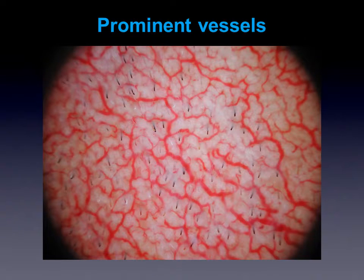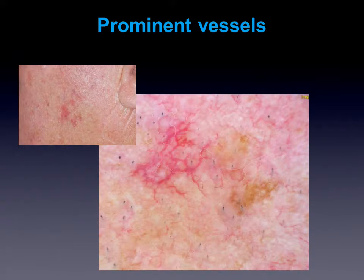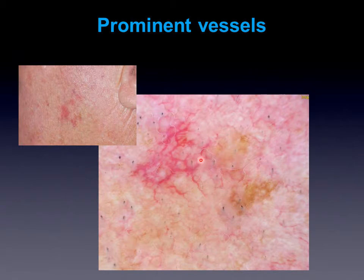Another important finding are the prominent vessels in sun-damaged skin of the face. You shouldn't confuse these vessels with, for example, arborizing vessels of a basal cell carcinoma. These branched vessels are more or less normal in sun-damaged skin of the face. Here again you see such an example of these telangiectatic vessels in the face. They are very prominent and you find them quite frequently on sun-damaged skin in the face.